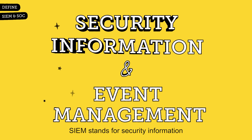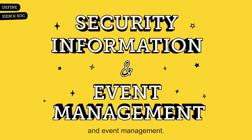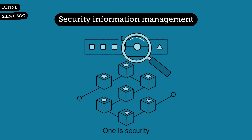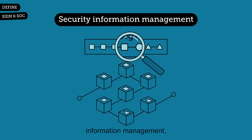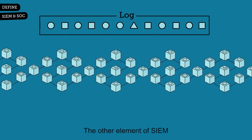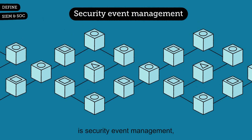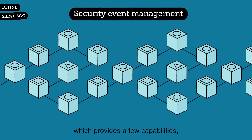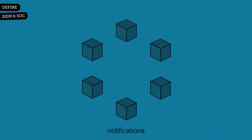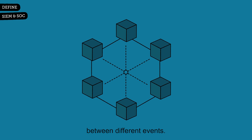SIEM stands for Security Information and Event Management. It combines two distinct capabilities. One is Security Information Management, which involves collecting and analyzing logs. The other element of SIEM is Security Event Management, which provides capabilities such as real-time monitoring of logs, notifications, and the ability to see relationships between different events.